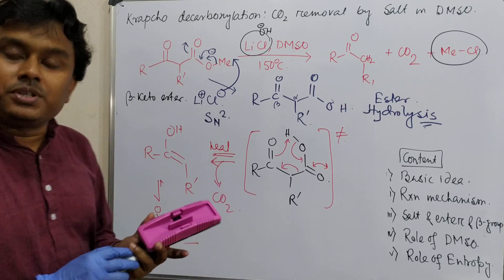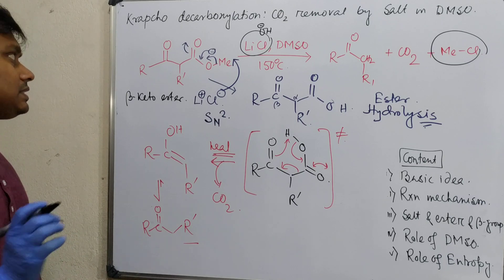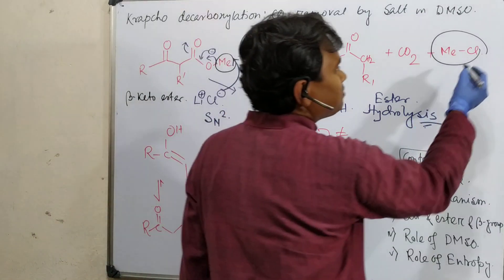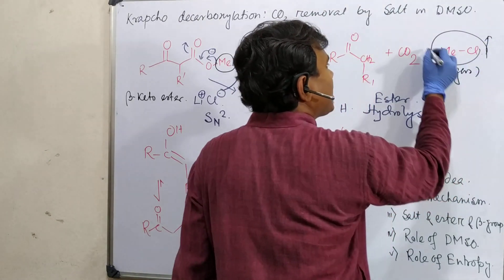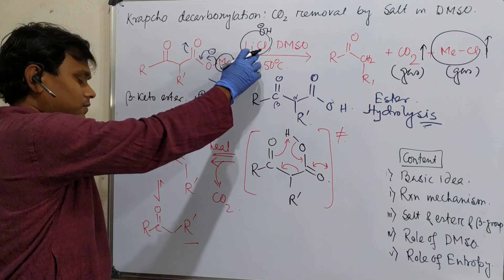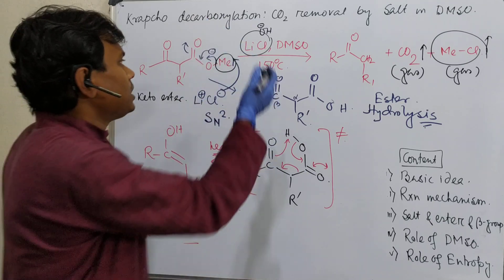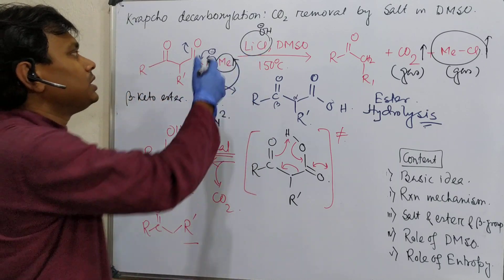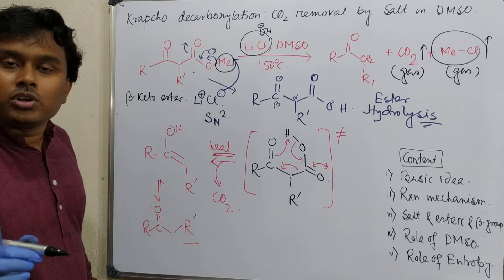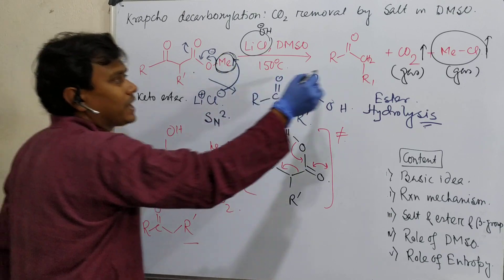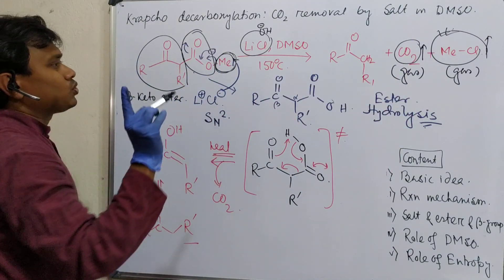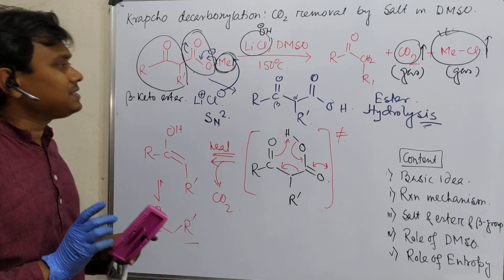Now the question: what is the role of entropy? This ester hydrolysis - whatever ester you can take for this process, but methyl ester provides better results. Why? Because during the reaction, methyl chloride is produced which is a gas. Carbon dioxide is produced which is also a gas. Two gas molecules are produced. This methyl part produces methyl chloride, this part produces carbon dioxide, and this part produces ketone. So one molecule is producing three molecules. That is the reason this is entropically favored.